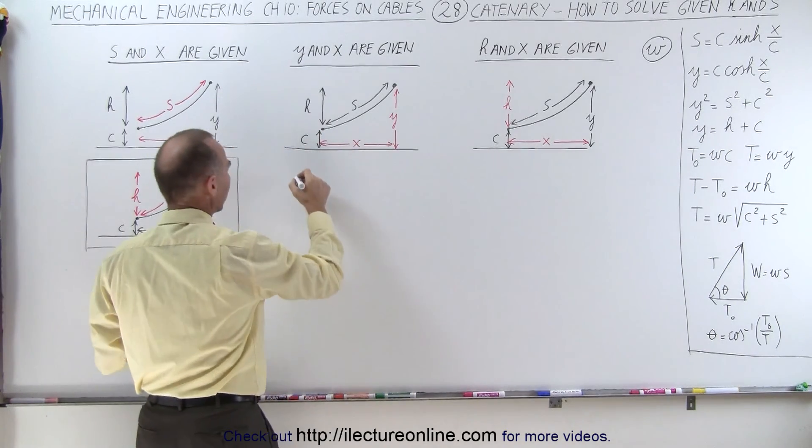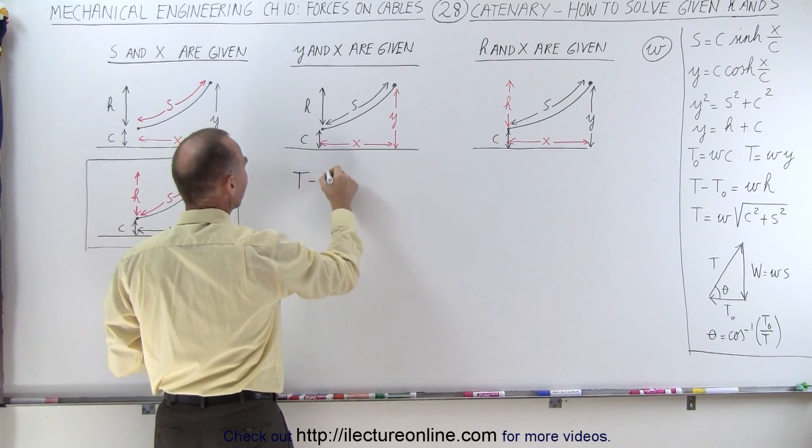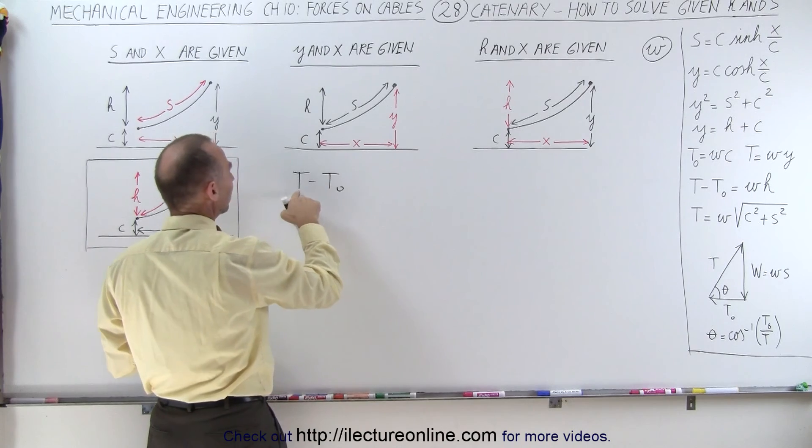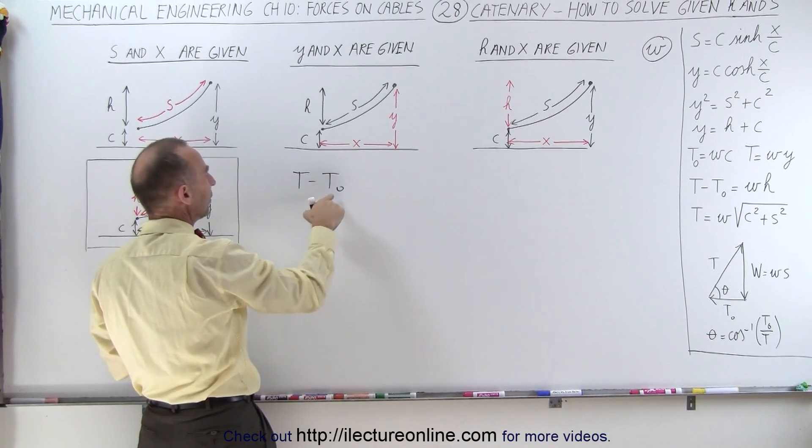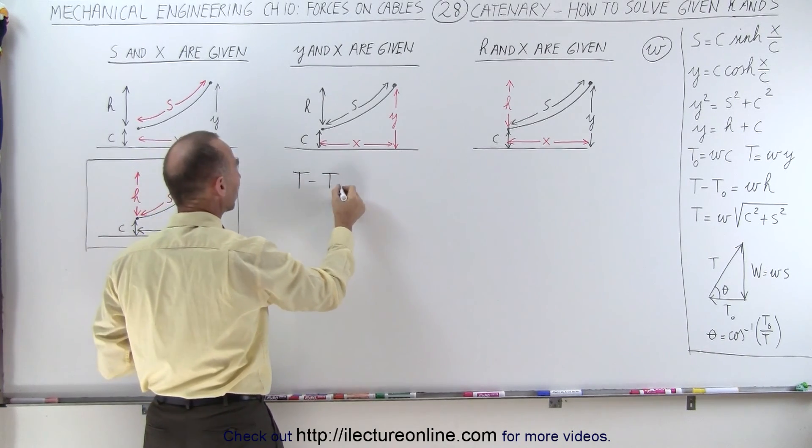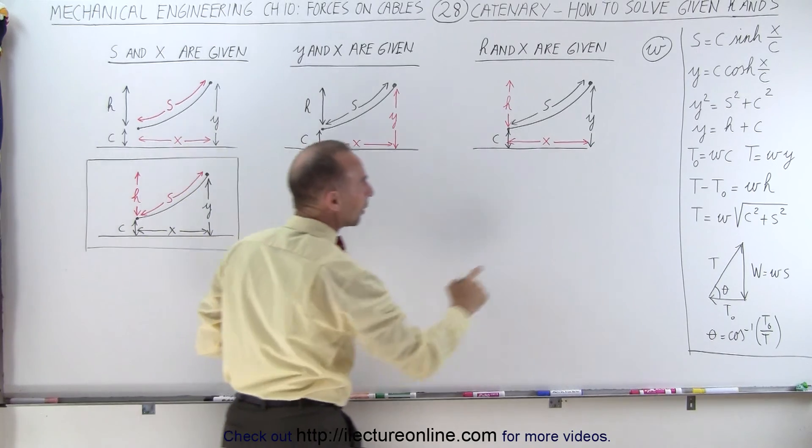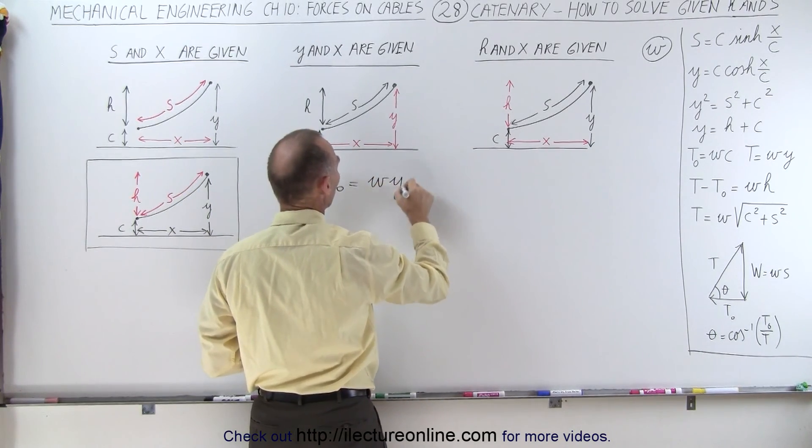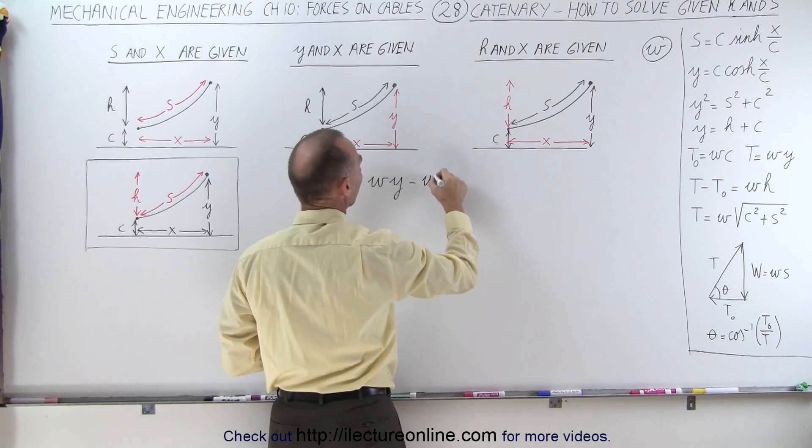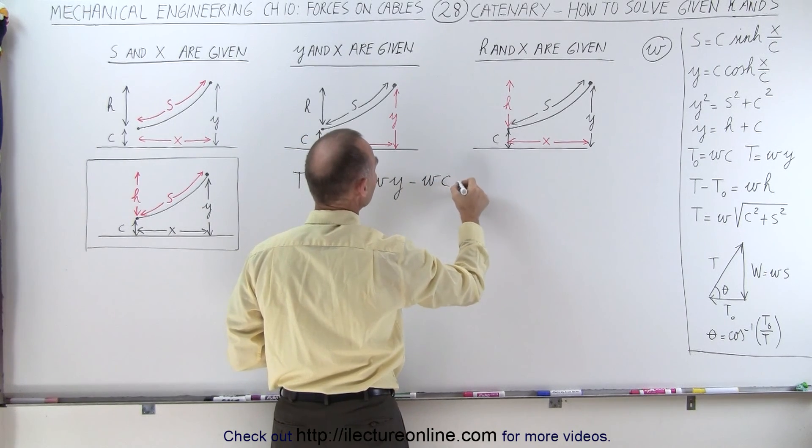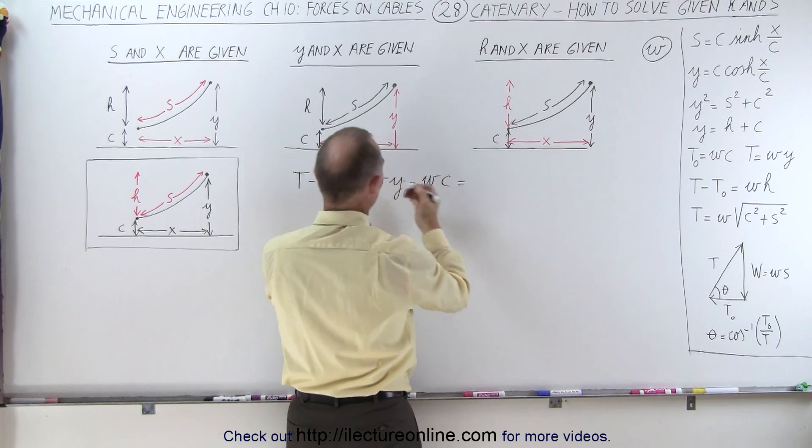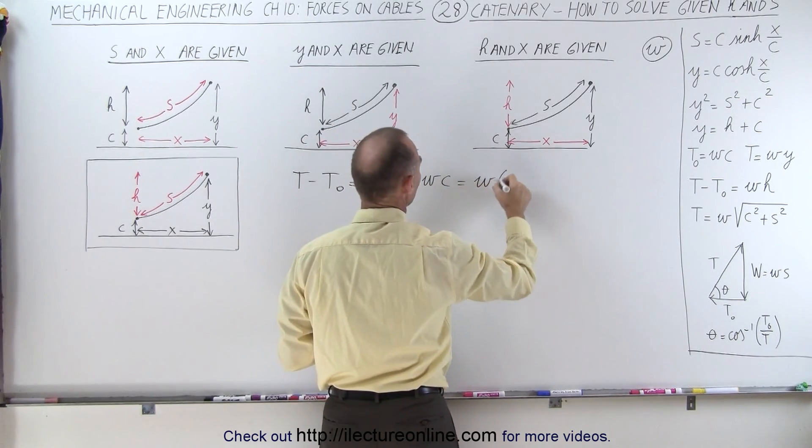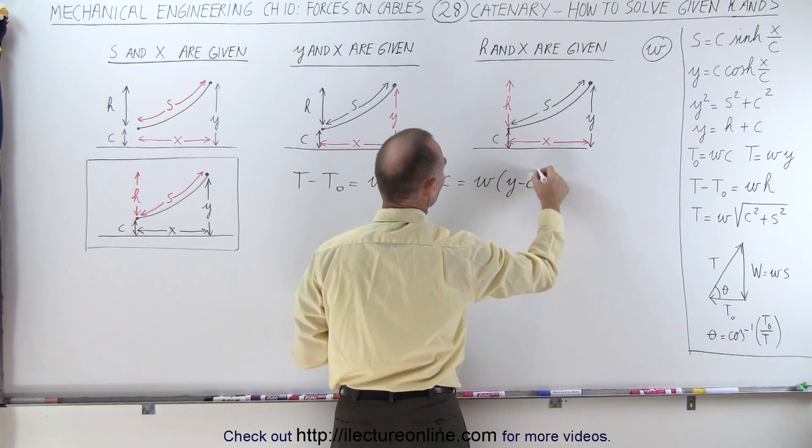So what we're going to write here, we're going to write that T minus T sub-naught, that's the tension at the high contact point and the tension at the lowest point in the cable. When we take the difference between those two, we can say that's equal to the weight per unit length times Y minus the weight per unit length times C, which we can factor out the weight per unit length times Y minus C.